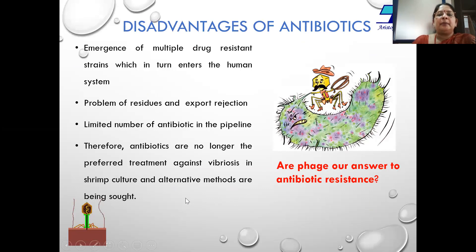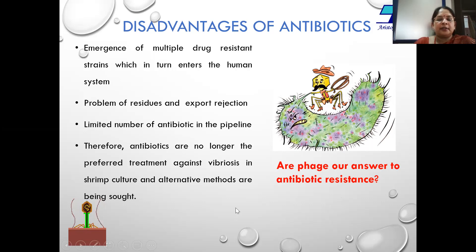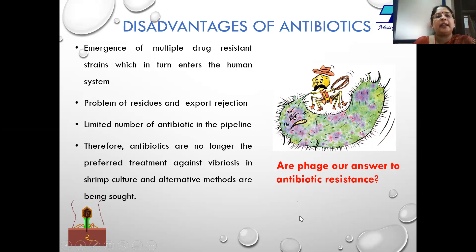Currently we are using antibiotics for the control of vibriosis, but the major problem is the overuse and misuse of antibiotics, which has resulted in multiple drug-resistant pathogens — not only in aquaculture, but these also enter the human system. By the year 2050, literature states that deaths due to multiple drug-resistant pathogens will be a greater killer than cancer. A second problem with the use of antibiotics is export rejection.